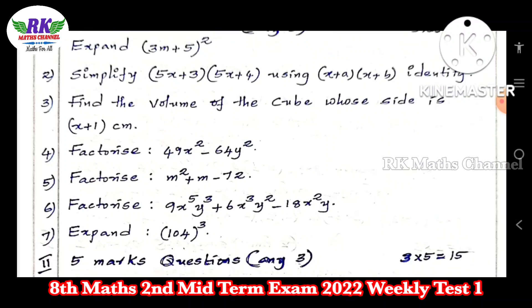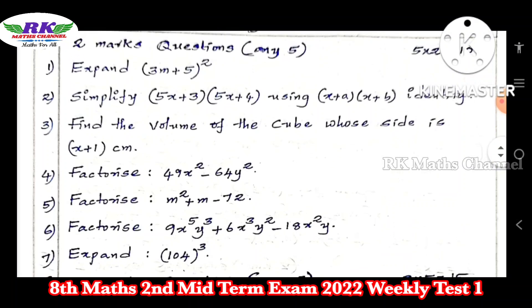Next, expand 104³. So 104³ is using identity. What? If you have an identity, you have 100 + 4. Then you apply the a + b whole cube formula.